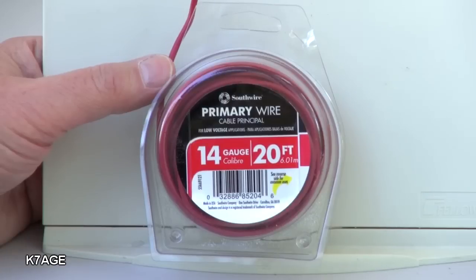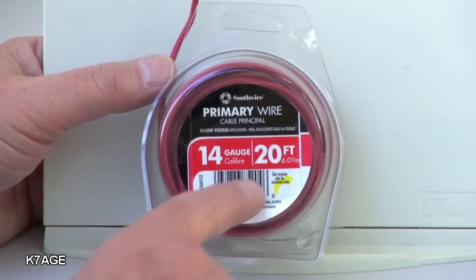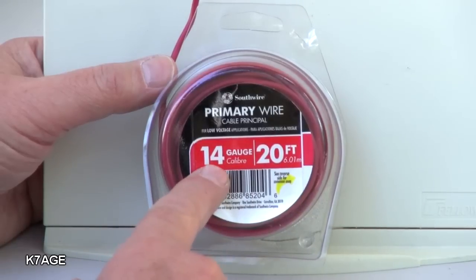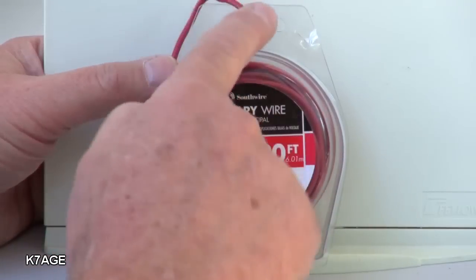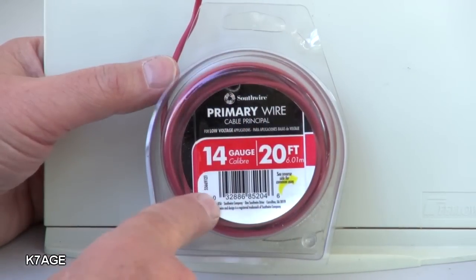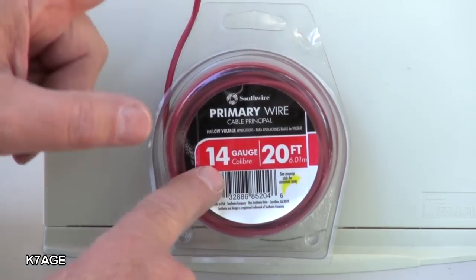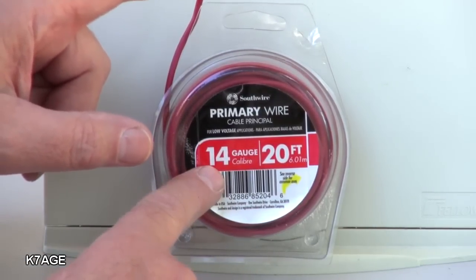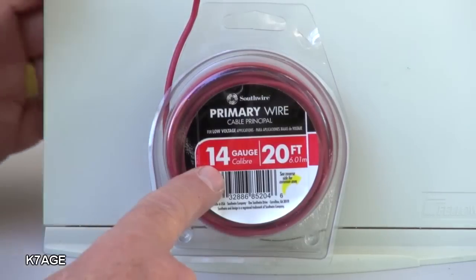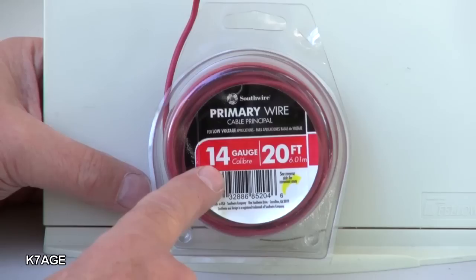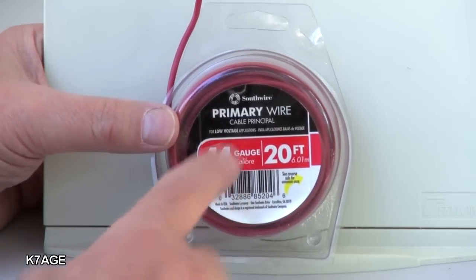So on the way home from the ham fest I stopped by my do-it-yourself home center and I bought 20 feet of 14 gauge stranded wire insulated. I've selected red, this was less than five dollars I think it was four dollars and 96 cents so this whole thing isn't costing me really more than about ten dollars or so. A lot of talk about insulated versus non-insulated wire, for what we're doing don't worry about it. Get an old extension cord, zip cord, pull the wires apart, that will work too.